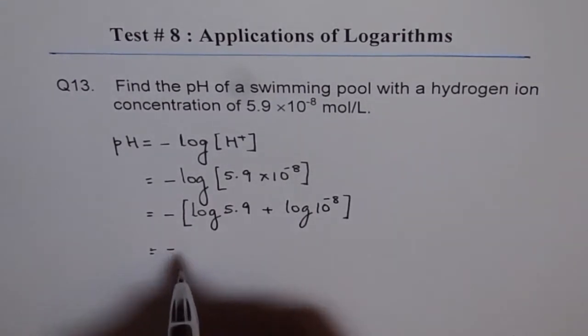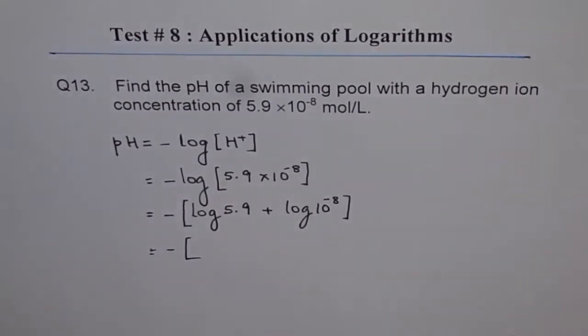Now we can use the calculator to calculate this value. So log of 5.9 is equal to 0.77.